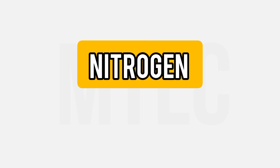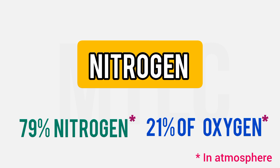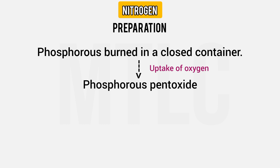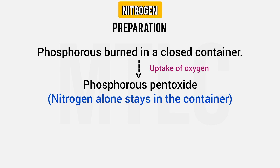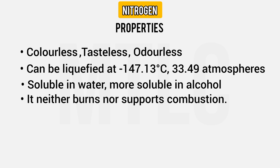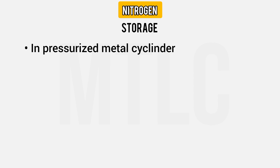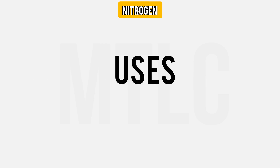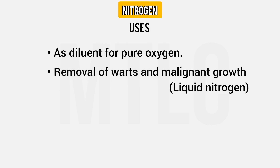Next is Nitrogen. In air, 79% is nitrogen and 21% is oxygen. Nitrogen is a colorless, tasteless, odorless gas with a boiling point of minus 147.13 degrees Celsius. At that temperature, nitrogen becomes a liquid. It is slightly soluble in water and more soluble in alcohol. It neither burns nor supports combustion. Nitrogen is stored in a grey metal cylinder with a black neck and shoulder under pressure. Liquid nitrogen is also used.